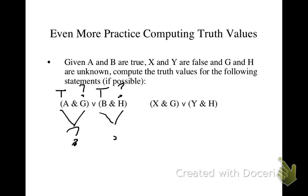Likewise, we can't do anything on the other side with B and H for the same reasons. So it turns out that we cannot calculate the truth value for this formula without knowing the truth value for at least one or the other, G or H.